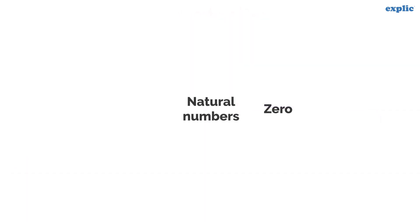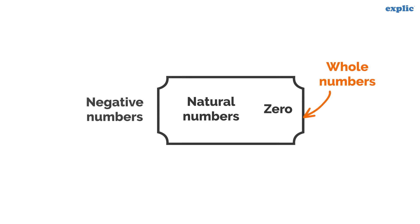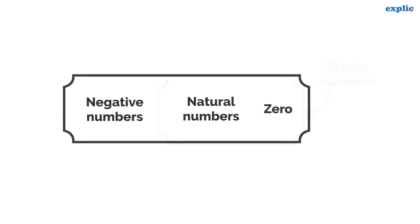Therefore, we can say that natural numbers and zero together are the whole numbers. Whole numbers and negative numbers together are integers.